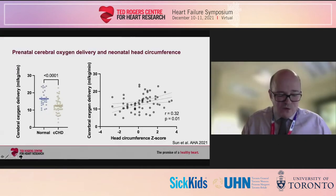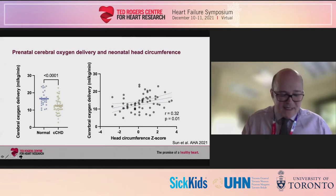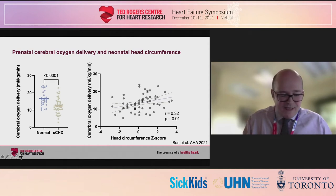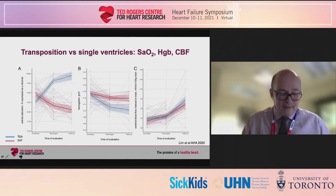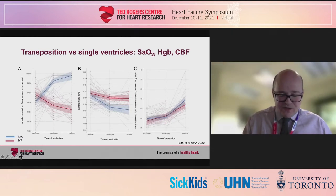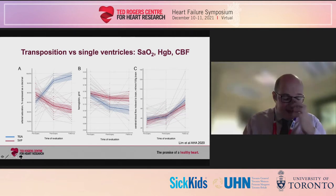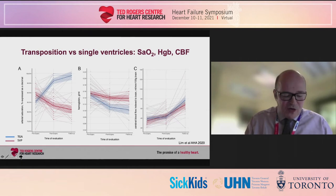The disruption of normal fetal streaming combined with diminished umbilical blood flow and placental gas exchange results in significant reductions in cerebral oxygen delivery in all major forms of congenital heart disease, while cerebral oxygen delivery is correlated with neonatal head circumference. We hypothesized that persistent decrements in cerebral oxygen delivery might be associated with ongoing impairment of infant brain growth in patients with single ventricle heart disease following stage one palliation.